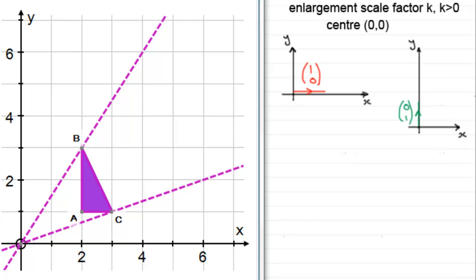To build up the transformation matrix, what we need to do is consider where these two unit base vectors go under the given transformation. So for the first one here, (1,0), if we enlarge this scale factor k—k is a positive value—centered at the origin, then it stays at the origin but increases in length by k units.